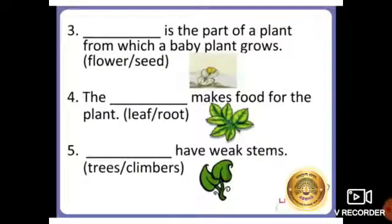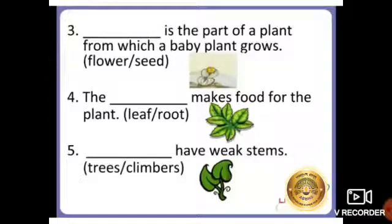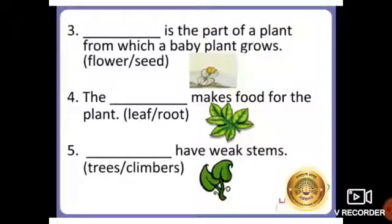Third one: blank is the part of a plant from which a baby plant grows. The answer is seed. Seed is the part of a plant from which a baby plant grows. Fourth one: The blank makes food for the plant. The answer is leaf. The leaf makes food for the plant. Fifth one: blank have weak stems. The answer is climbers. Climbers have weak stems.